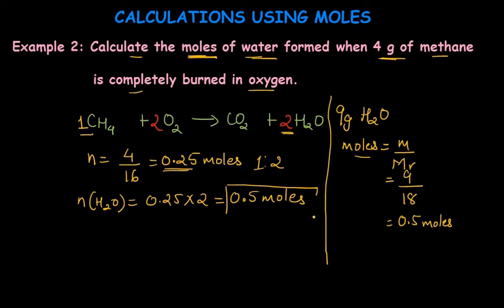So 0.5 moles of water is produced when 4 grams of methane is completely burnt. This shows how we can calculate moles from an equation when data is given as mass or moles.